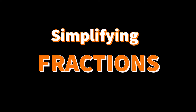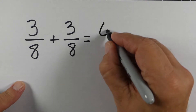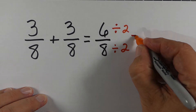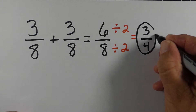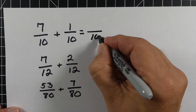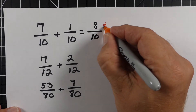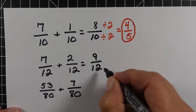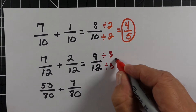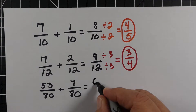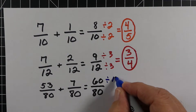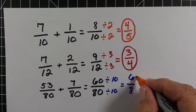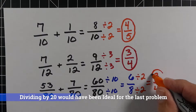Now let's talk about simplifying fractions — it's a pretty big deal. For a simple problem like 3/8 plus 3/8, you get 6/8. We divide both the top and bottom by 2 and get 3/4. With 8/10, divide both by 2 to get 4/5. With 9/12, divide by 3 to get 3/4. With 53/8 plus 7/8, we get 60/8 and can divide by 10 to get 6/8. But that simplifies again — 2 goes into both — giving us 3/4.